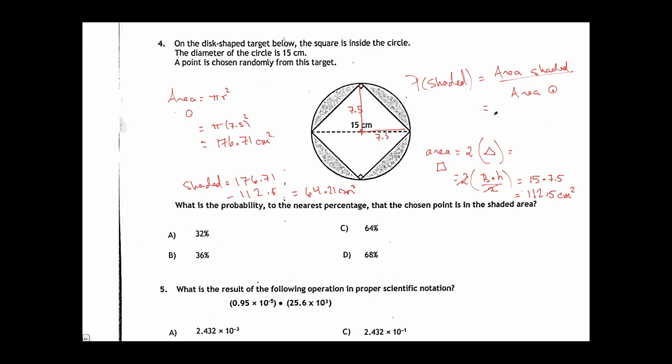Cutting that out from the circle leaves us with shaded part equal to 176.71 minus 112.5, which is 64.21 cm squared. Finally, our probability will be that area of the shaded part, 64.21, divided by the total area of the circle, 176.71, and we multiply by 100 to turn that into a percentage, and we get 36%. The correct answer is therefore B.